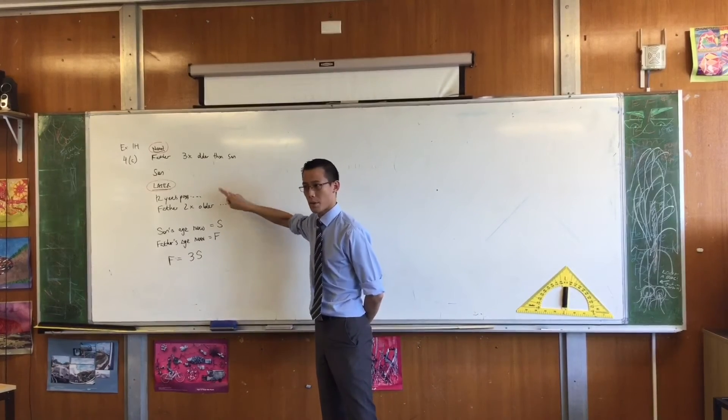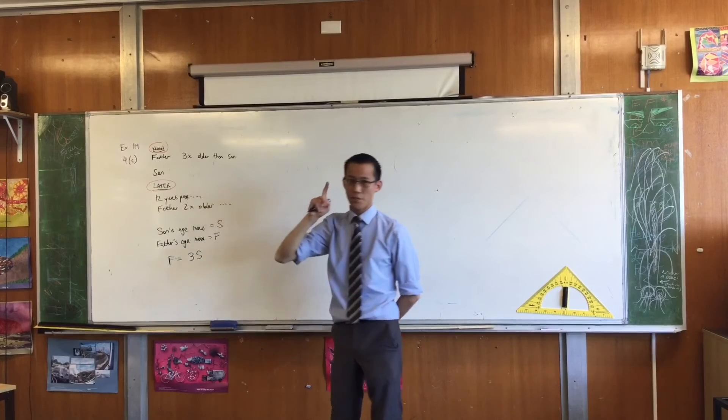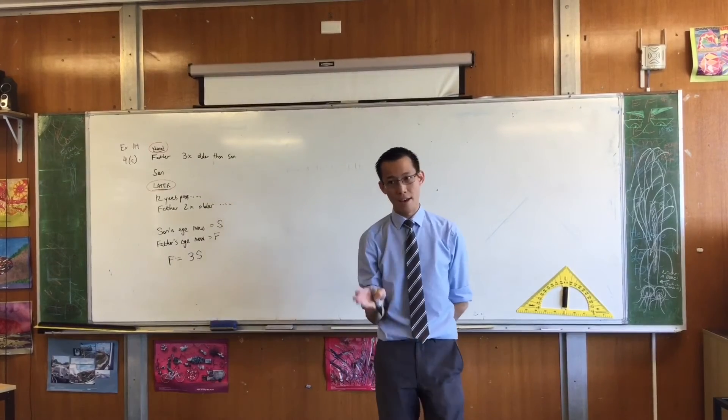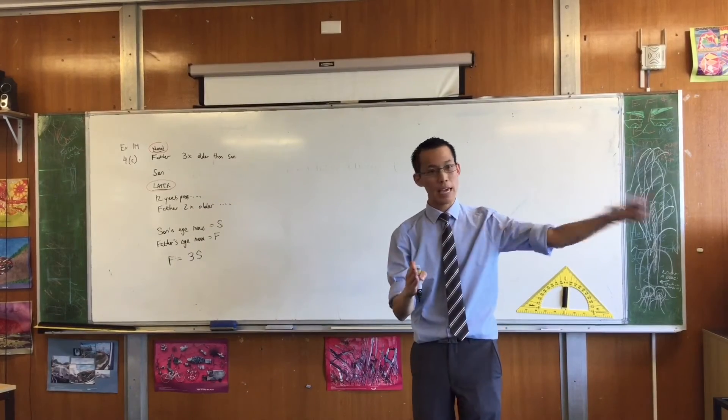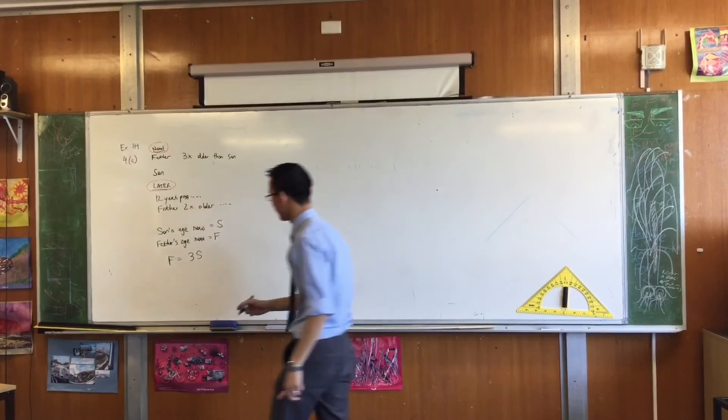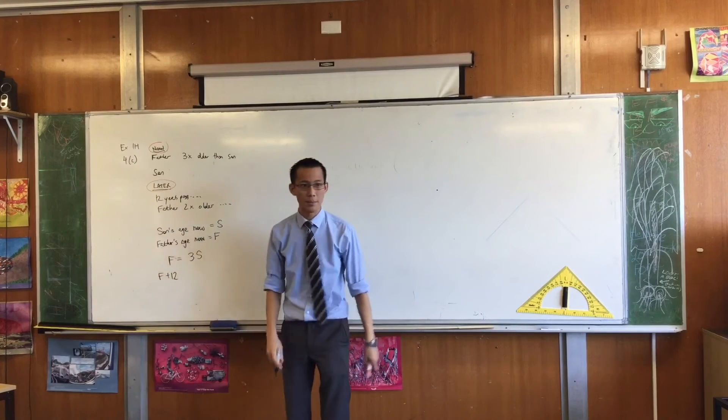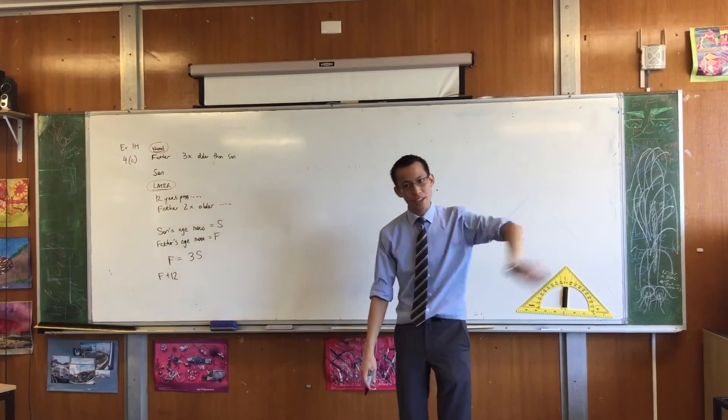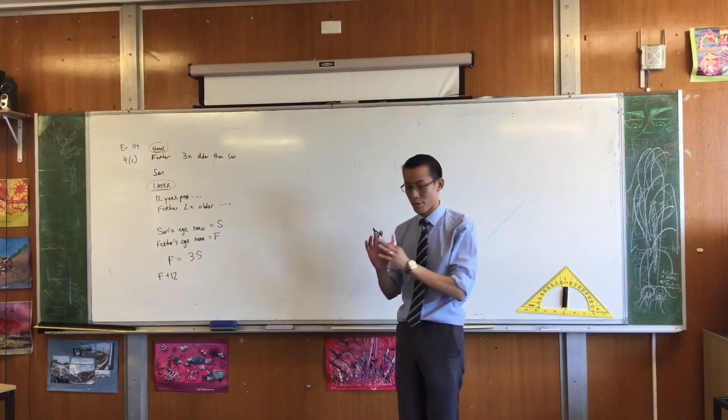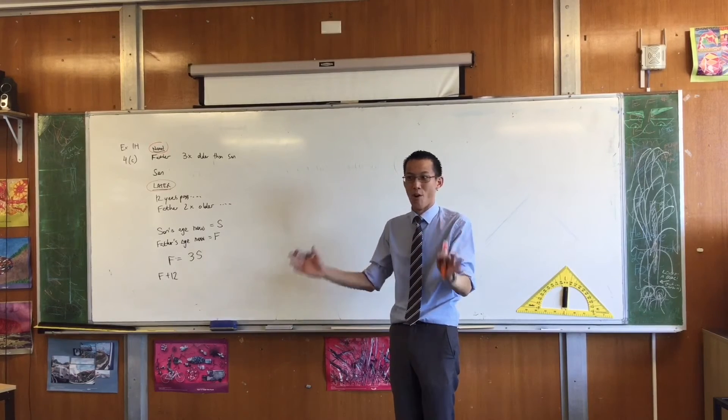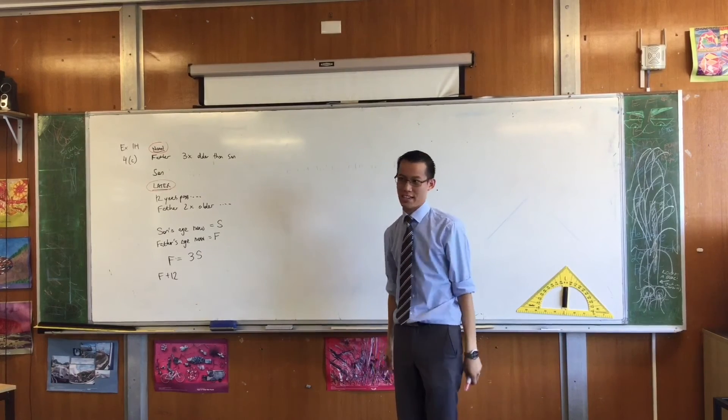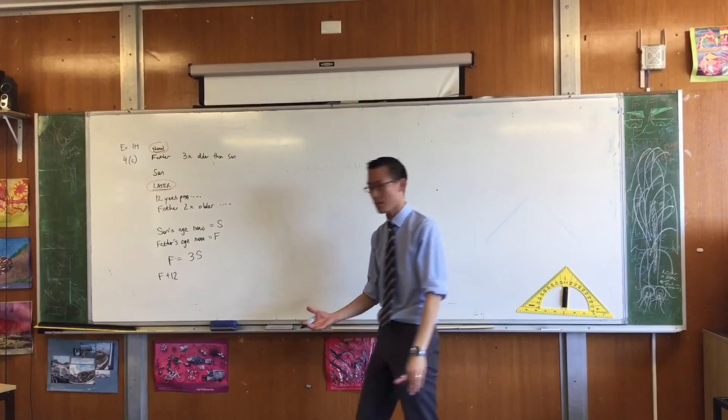Now, 12 years have to pass. So if the father's age is right now f, then in 12 years it's not going to be f anymore. It will be? F plus 12. Sure. So it's increased, okay? But while the father's age is increasing, if there are no time machines or relativistic travel involved, the son is also aging at the same pace. Agreed?